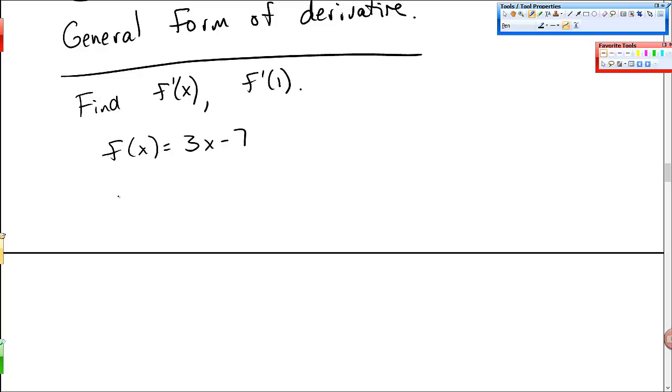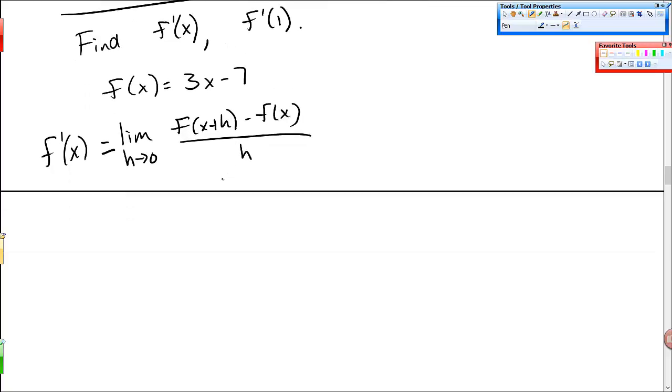So the limit definition of the derivative: limit as h goes to 0 of f of x plus h minus f of x over h. And this is f prime of x is equal to this thing. So my first step - your book separates this out. So I will find f of x plus h over here. So 3 times x plus h minus 7. This is 3x plus 3h minus 7.